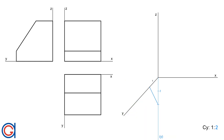From now on, we are going to transport real dimensions on the elongation of the Z axis and reduce them by drawing parallel lines to this blue line. If we want to use different reduction scales such as 3 to 4, we mark 3 on the Y axis and 4 on the elongation. The same applies for 1 to 4. The process is always the same: the numerator on the Y axis and the denominator on the Z elongation.